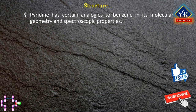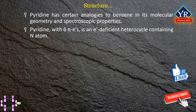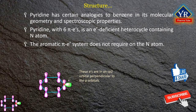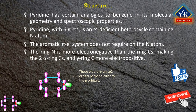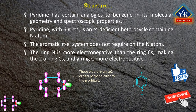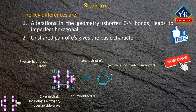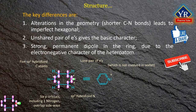Pyridine has certain analogies to benzene in its molecular geometry and spectroscopic properties. Pyridine, with six pi electrons, is an electron-deficient aromatic heterocycle containing a ring nitrogen atom. The aromatic pi electron system does not require the participation of the lone pair of electrons on the nitrogen atom. The ring nitrogen is more electronegative than the ring carbons, making the two alpha ring carbons and gamma ring carbon more electropositive than otherwise would be expected from benzene. The key differences are: 1. Alterations in the geometry, which is no longer perfectly hexagonal due to shorter carbon-nitrogen bonds. 2. The existence of an unshared pair of electrons not related with the aromatic sextet gives pyridine its basic character. 3. A strong permanent dipole in the ring due to the electronegative character of the heteroatom compared with carbon.